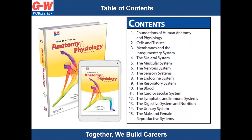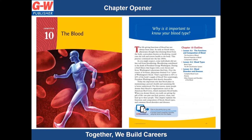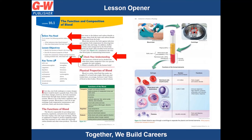Chapters are organized by the different body systems. Chapter information is divided into lessons, providing content in a more manageable format for students. Each chapter opens with visually stunning images to engage young readers. A short passage will pique students' interest and help them connect learning to their lives. Each lesson opens with before you read questions, along with learning objectives and key terms. Our text is broken down into smaller paragraphs to increase student comprehension and decrease reader fatigue. Check your understanding questions will help to increase retention.